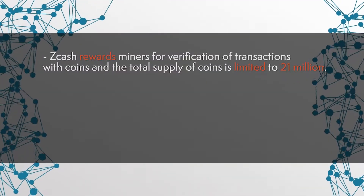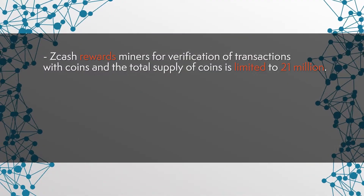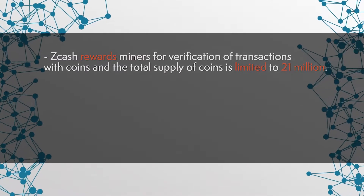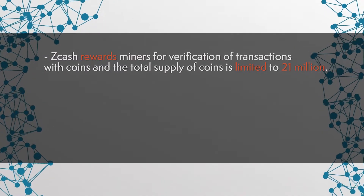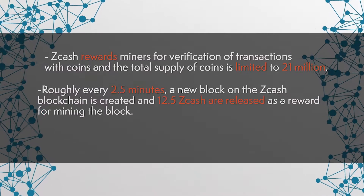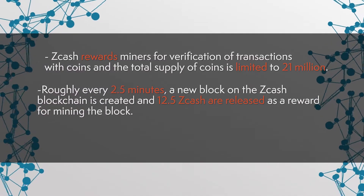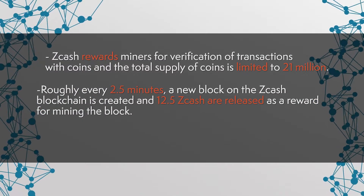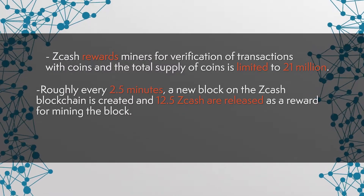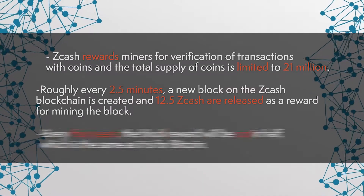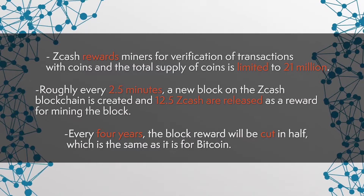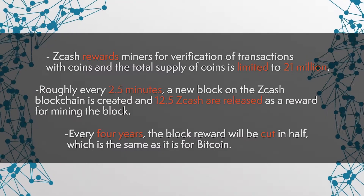Zcash rewards miners for verification of transactions with coins and the total supply of coins is limited to 21 million. Roughly every 2.5 minutes, a new block on the Zcash blockchain is created and 12.5 Zcash are released as a reward for mining the block. Every 4 years, the block reward will be cut in half, which is also the same as it is for Bitcoin.